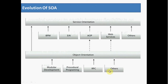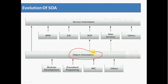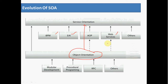How has SOA evolved? Prior to SOA we had object-oriented programming, which includes modular development, procedural programming, and remote procedure calls. The disadvantages and complexity of object orientation were addressed by service-oriented architecture. SOA consists of various components including web services, business process management, enterprise application integration, communication via a middleware integration platform called the Enterprise Service Bus, and business services to implement end-to-end business process scenarios.